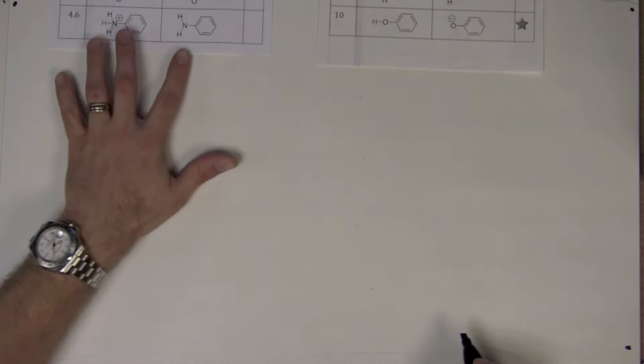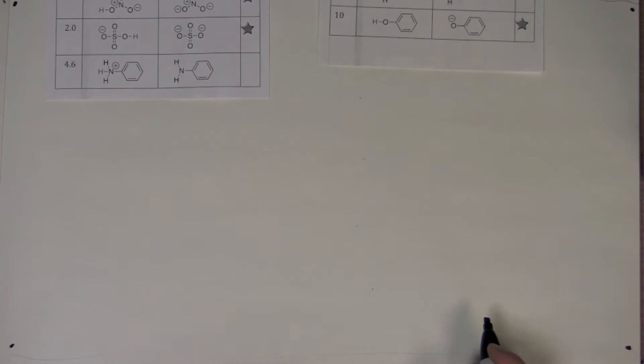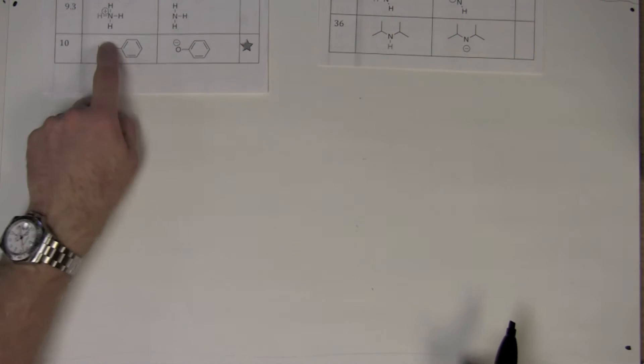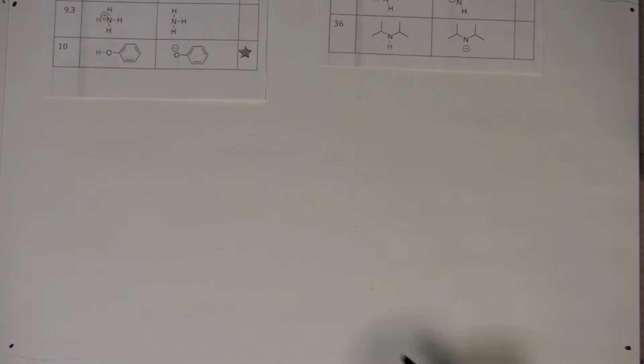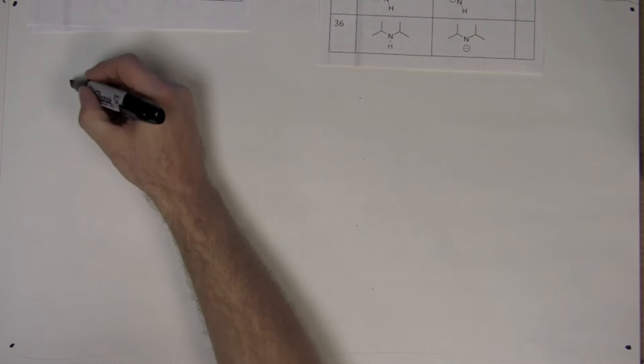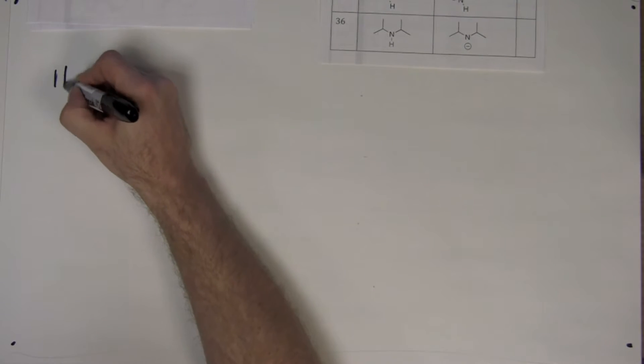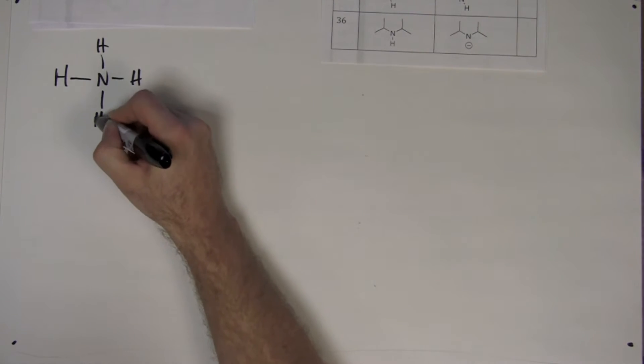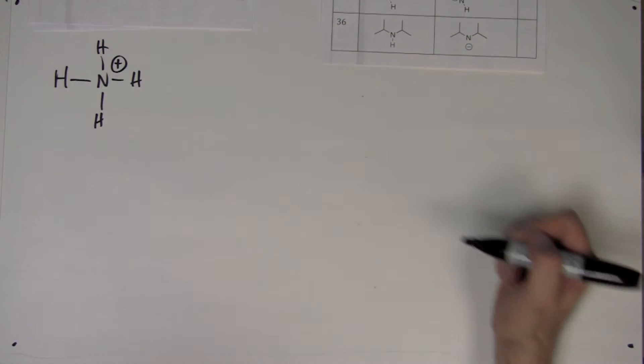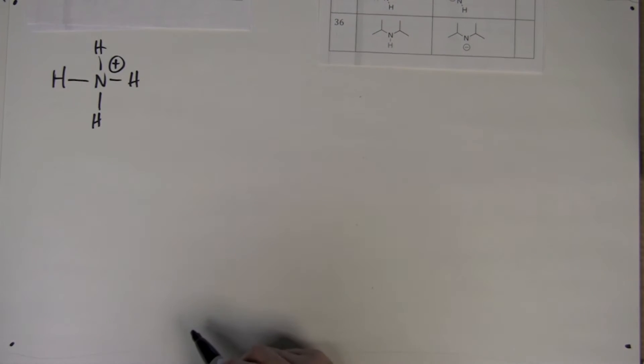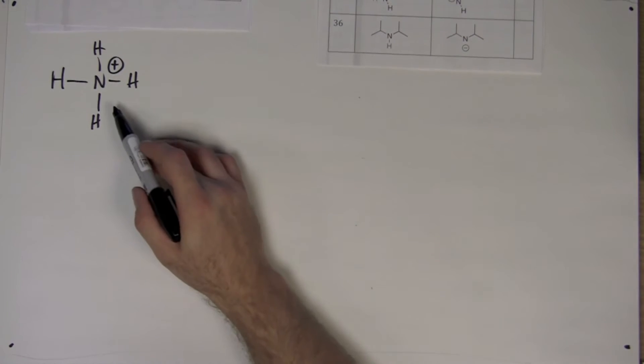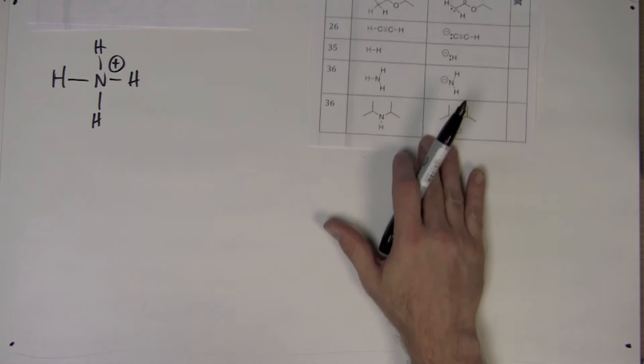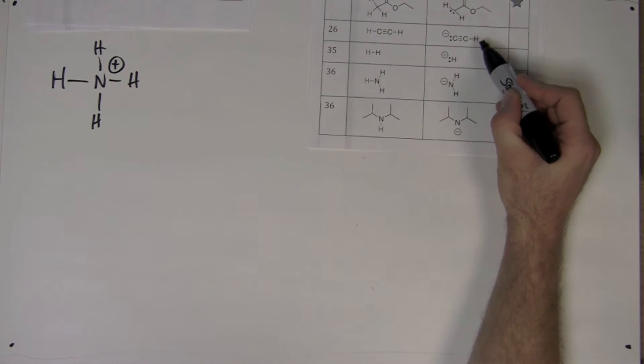For example, we can take the following ammonium as an acid. This is also a way to practice drawing Lewis structures and calculating proper formal charges. We react this acid with a conjugate base, for example, the following alkyne anion.